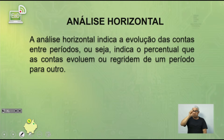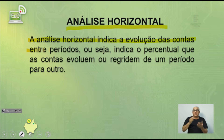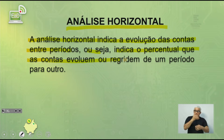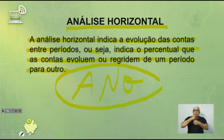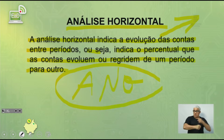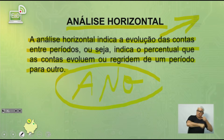A análise horizontal indica a evolução das contas entre períodos — o percentual que as contas evoluem ou regridem de um ano para o outro. Ela compara entre anos: ano 1 com ano 2, ano 2 com ano 3, e assim sucessivamente. Muita atenção nisso — pode ser que tenha na prova.